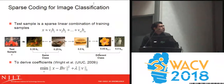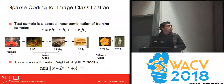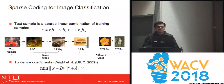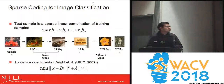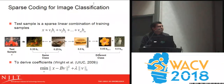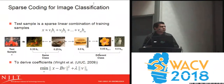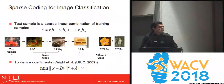Let me start by explaining a general sparse coding problem. In a sparse coding problem, the test sample is a linear combination of the training samples. As we can see in the diagram, the test sample X is the linear combination of the training samples. All samples of the same class have a large coefficient, whereas samples of different classes will have zero or very low coefficients. In order to derive these coefficients, we use the following objective function.